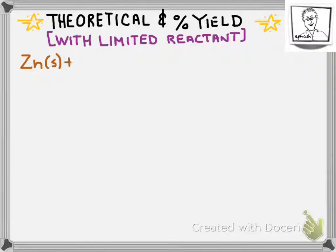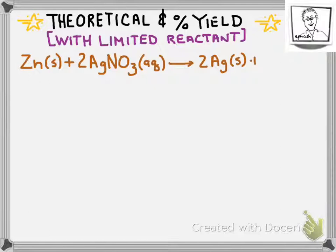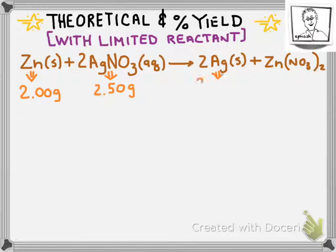In this example, we're looking at the reaction of zinc with some aqueous silver nitrate solution. This is a single displacement reaction that produces some silver metal and some zinc nitrate. We're interested in the silver in this case. In this reaction, we started out with 2 grams of zinc and 2.5 grams of the silver nitrate. We're asked to find the grams of silver.